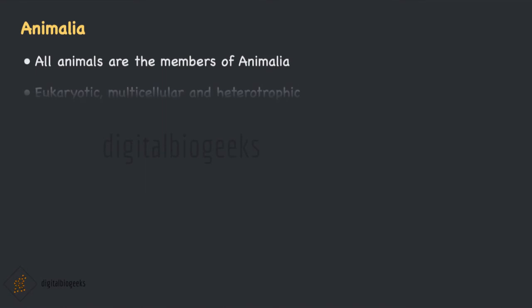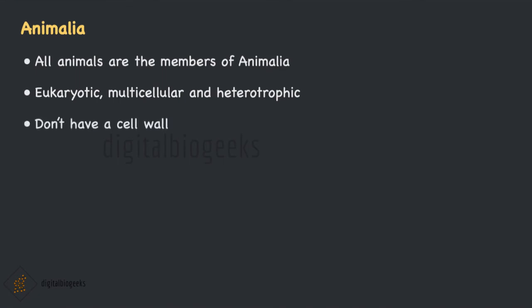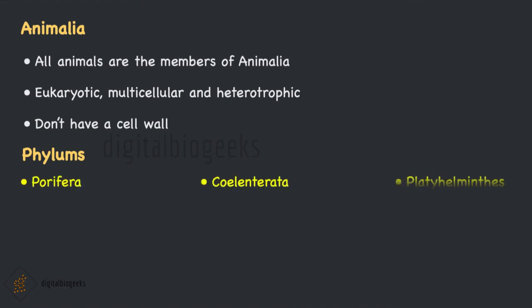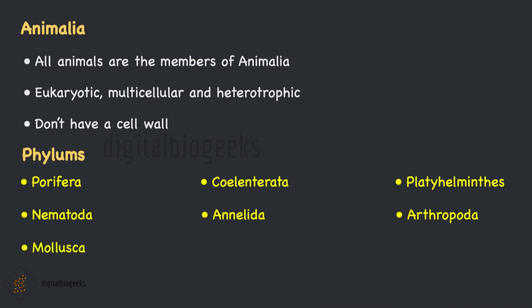Moving on to Kingdom Animalia. All animals are members of Kingdom Animalia. They are eukaryotic, multicellular and heterotrophic. Eukaryotic means they have a nuclear membrane and membrane-bound organelles; heterotrophic means they cannot synthesize their own food by photosynthesis and depend on other organisms for survival. Unlike plants, the cells of animals don't have a cell wall. The phylums under Kingdom Animalia are: Porifera, Cnidaria, Platyhelminthes, Nematoda, Annelida, Arthropoda, Mollusca, Echinodermata, Protochordata and Vertebrata.